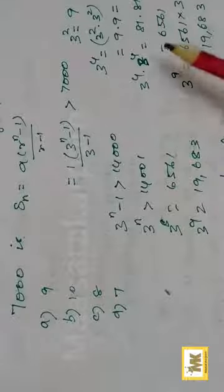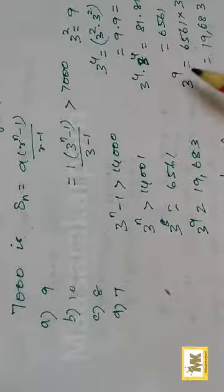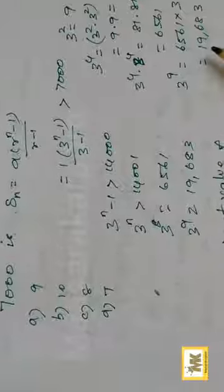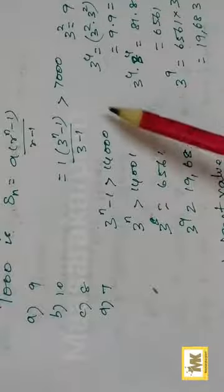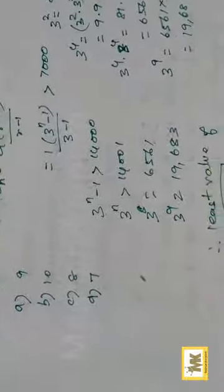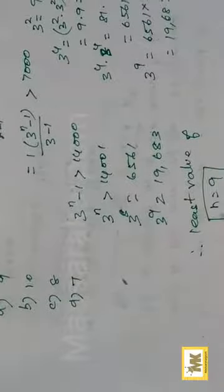3 to the power 8 is 6561. 3 to the power 9 is 19000, which is greater than 14001. So the least value for n is 9.